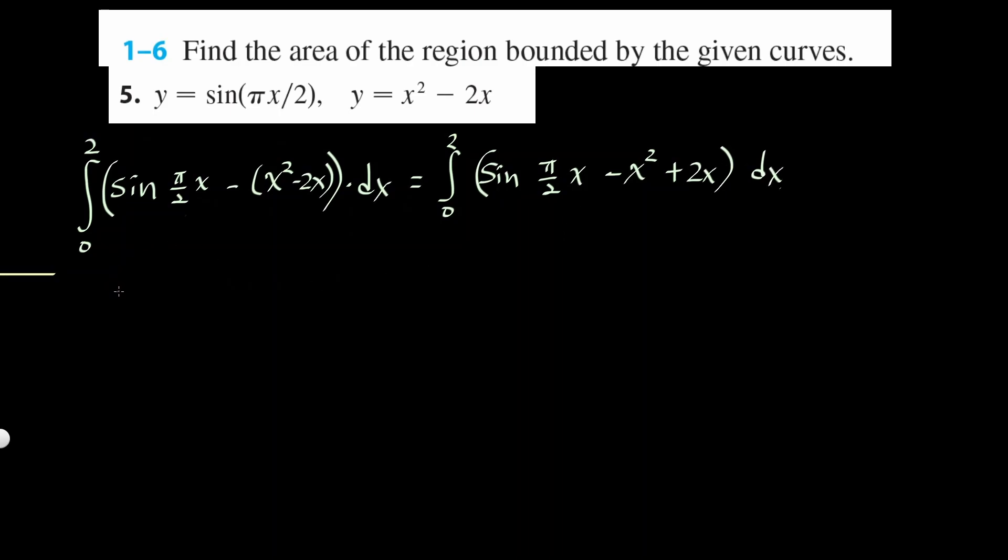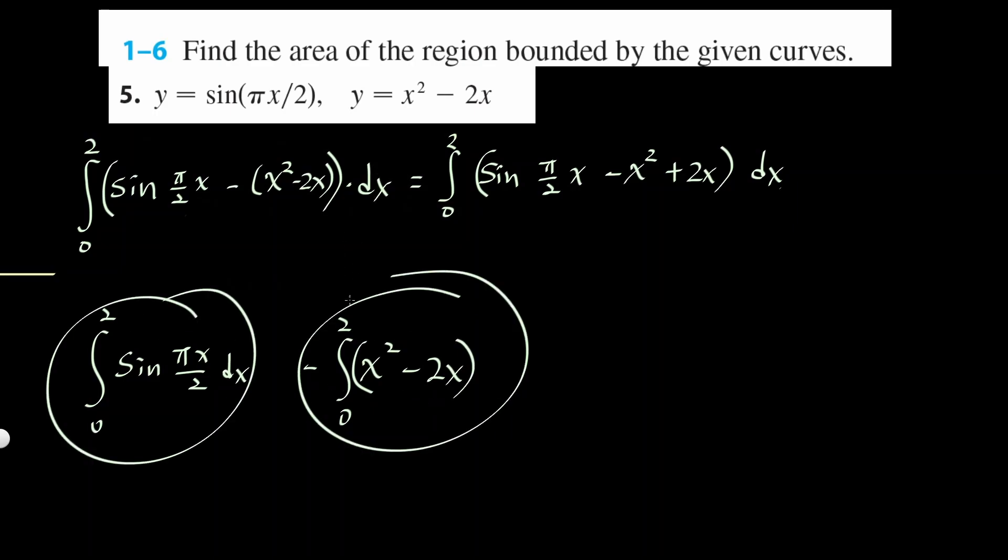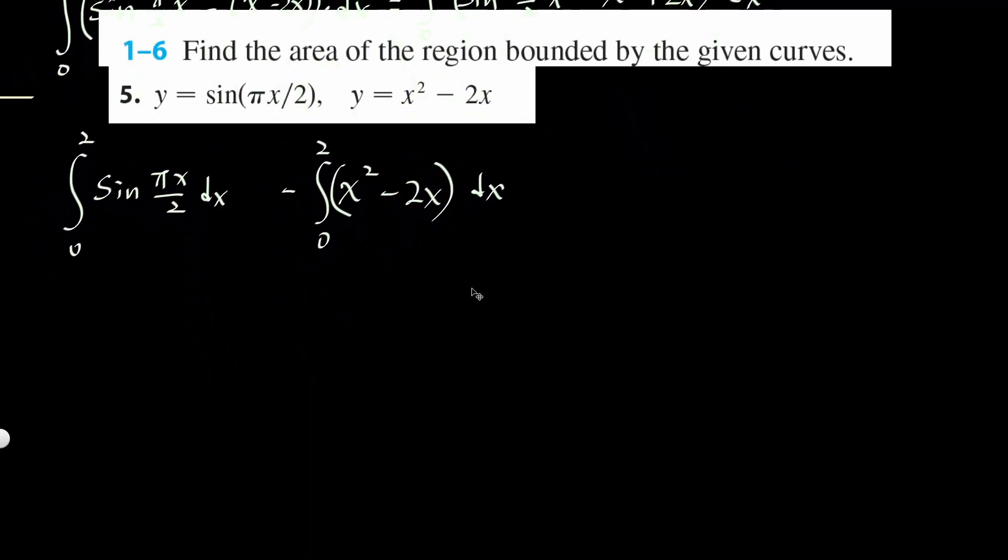So I'm going to integrate it separately. So I'm going to integrate sine πx over 2 dx, 0 to 2. And then integrate, if I factor negative out, it's going to be 0 to 2, x squared. Since I factor negative out, this becomes minus 2x. I'm going to integrate this and this separately like that. You could do all three if you want, but I'm just going to do it this way.